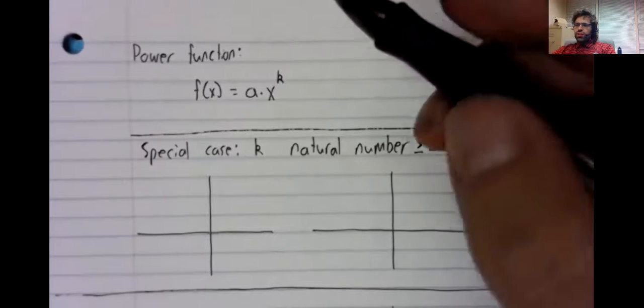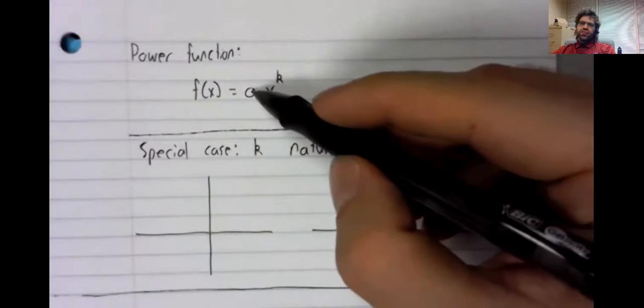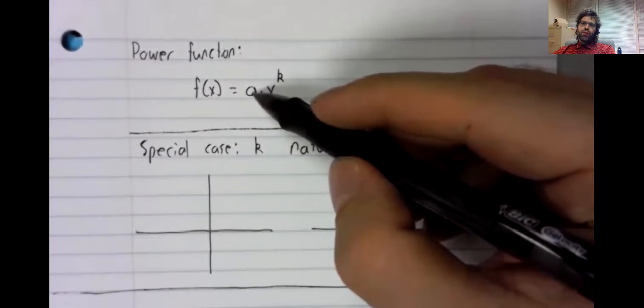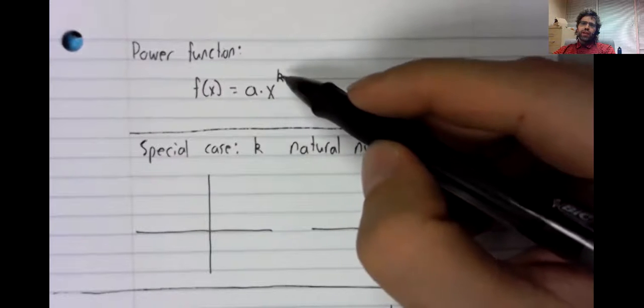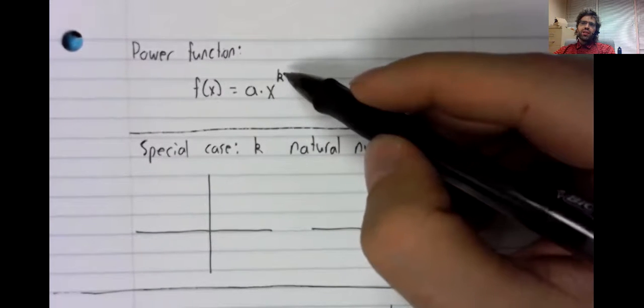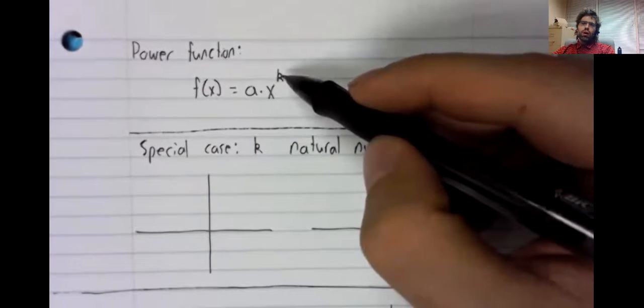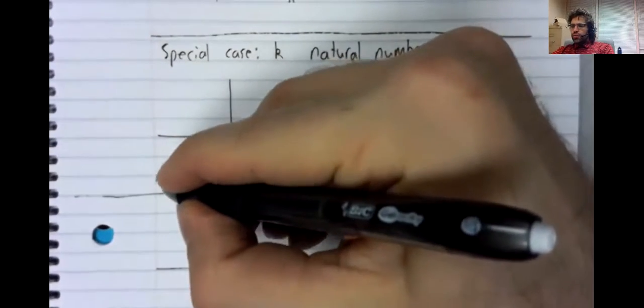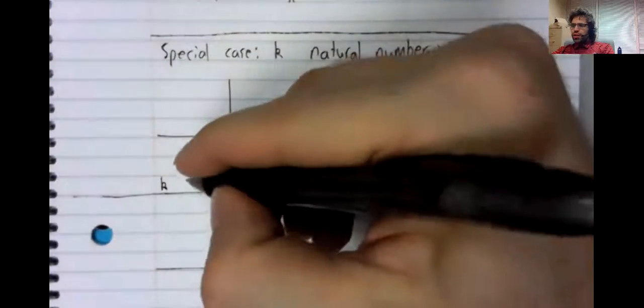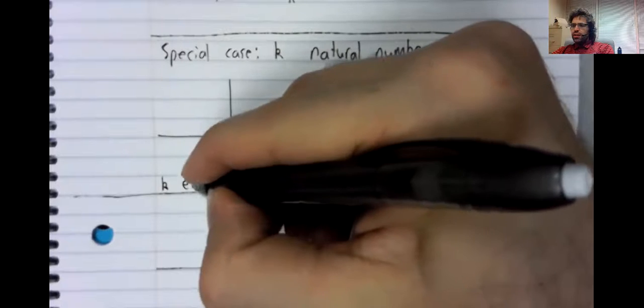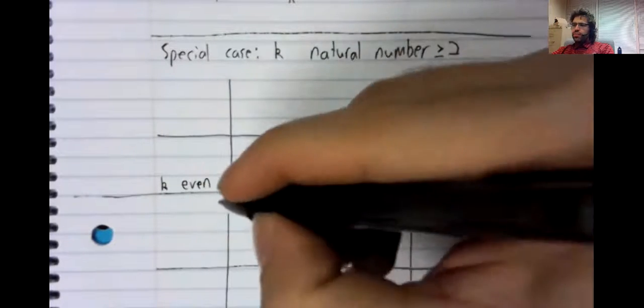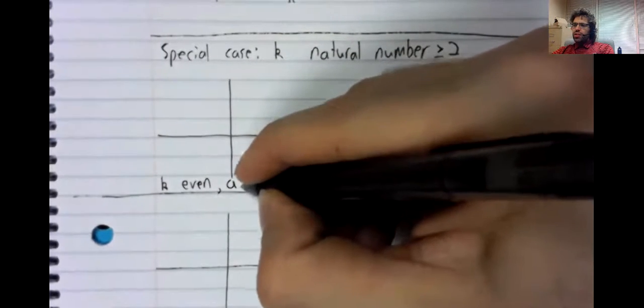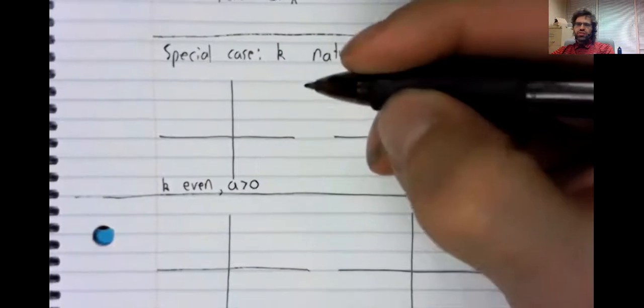How this breaks down is that a can be positive or negative, and k can be even or odd. So, for example, k even, a positive.